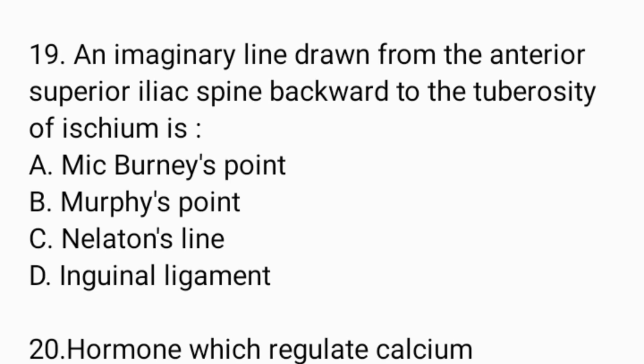Next question: An imaginary line drawn from the anterior superior iliac spine backward to the tuberosity of the ischium is — Option A: McBurney's point. Option B: Morphe's point. Option C: Nélaton's line. Option D: inguinal ligament. And the answer is Option C, Nélaton's line.